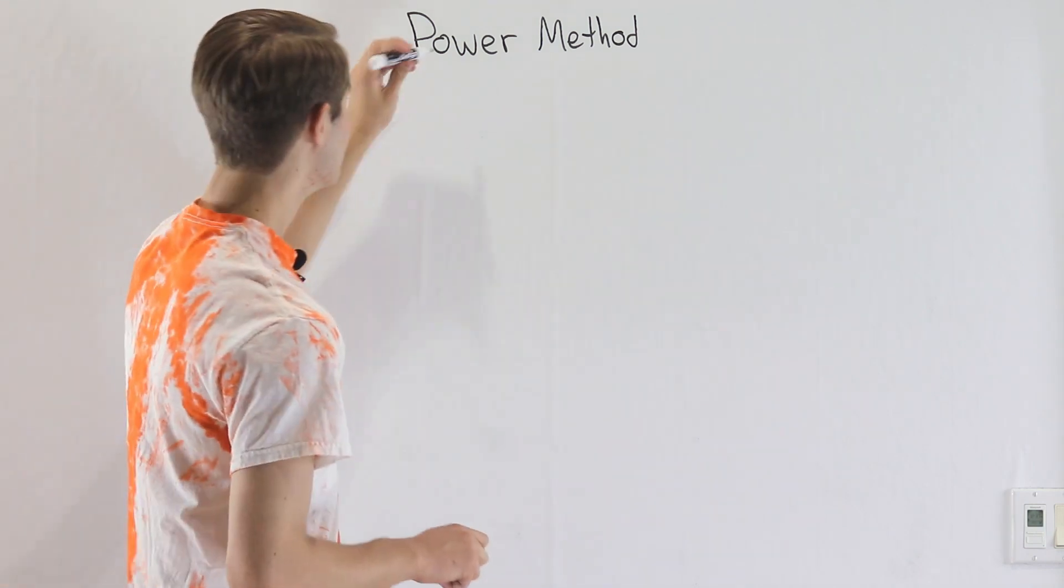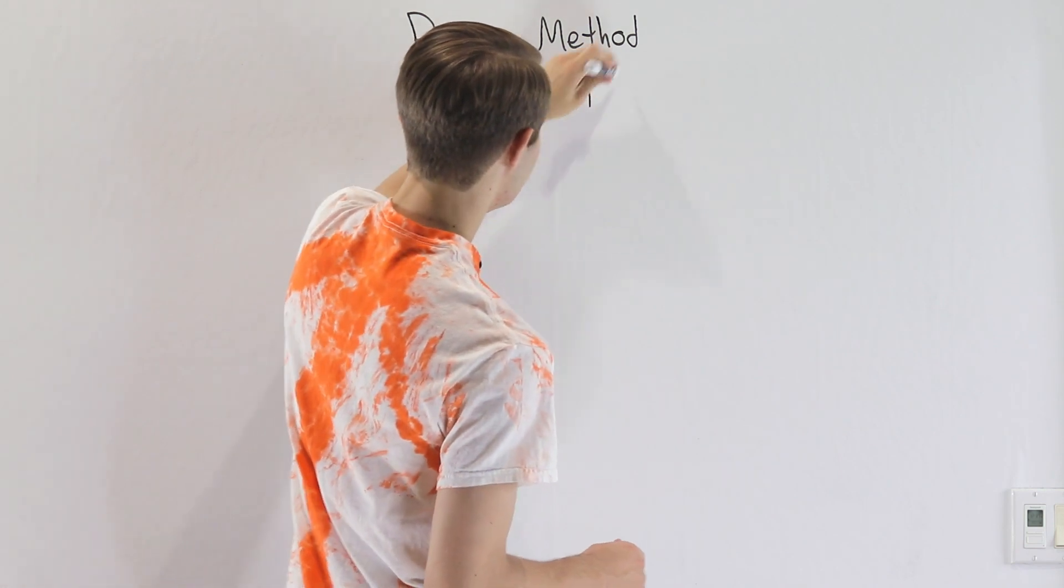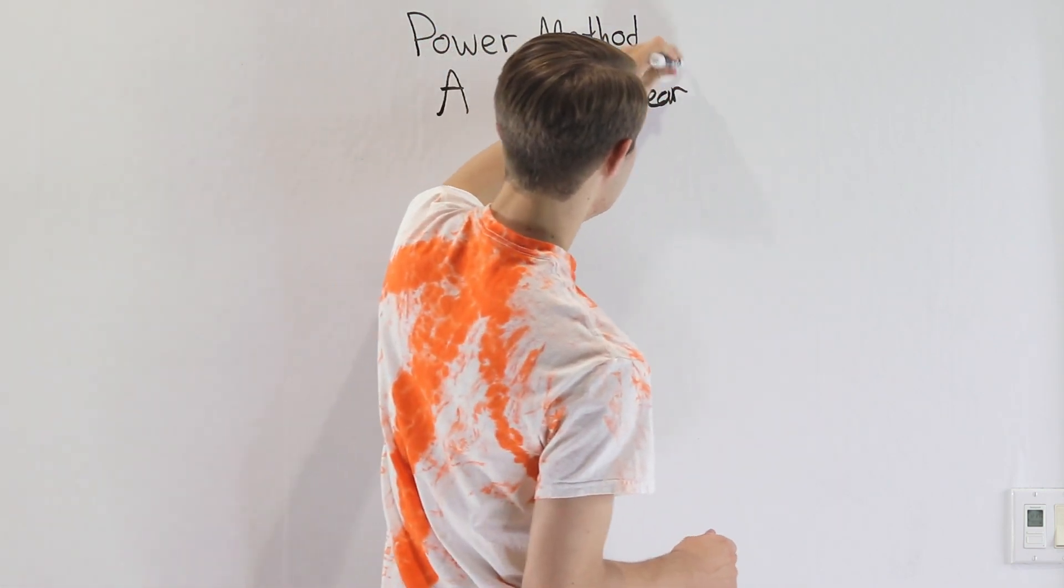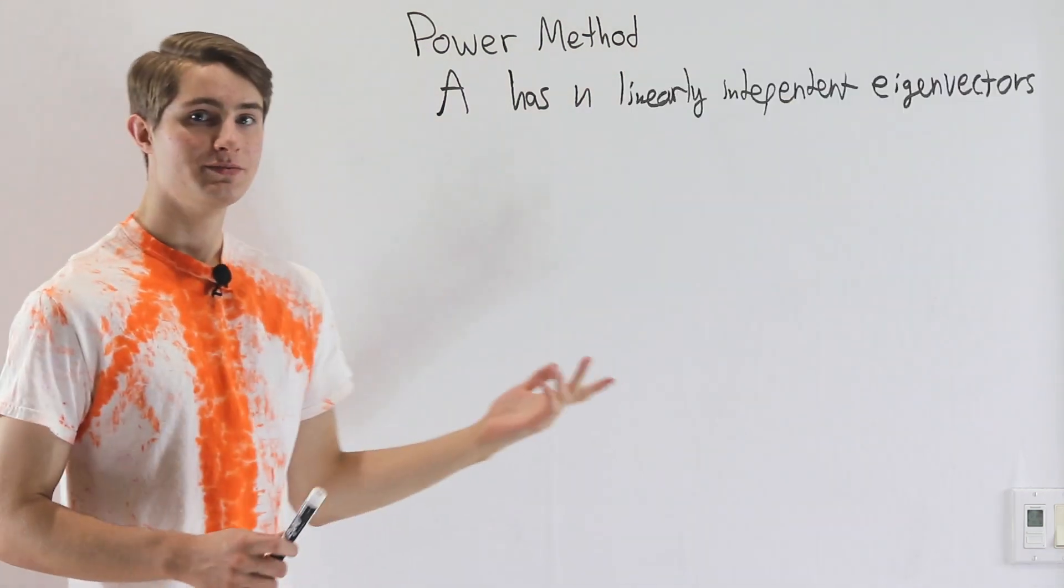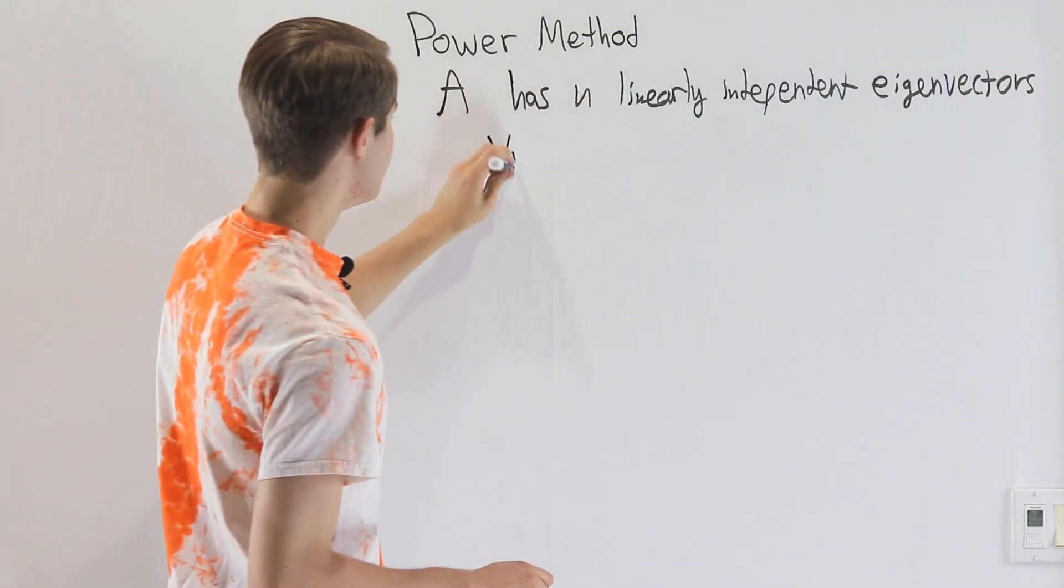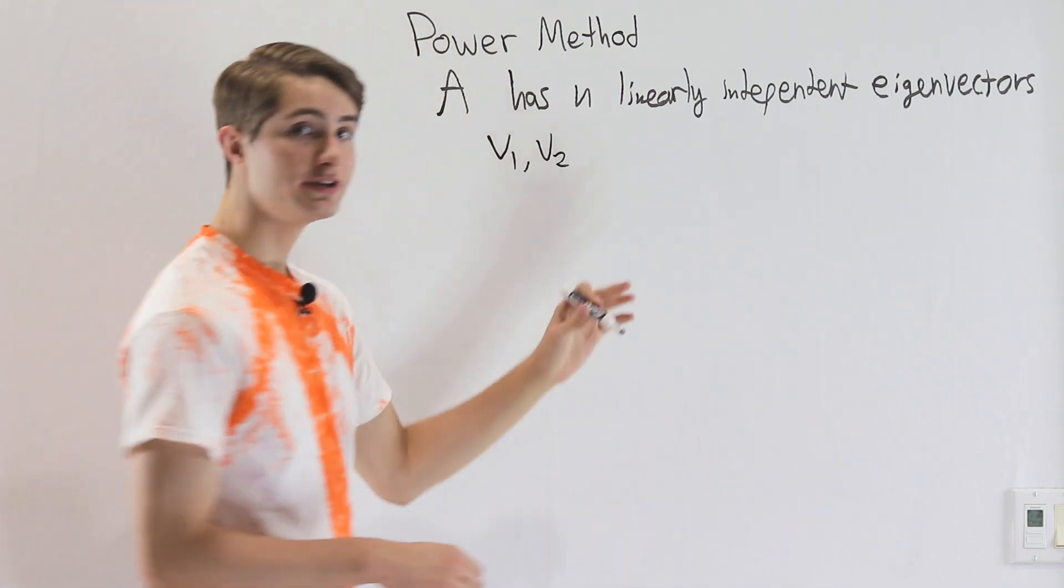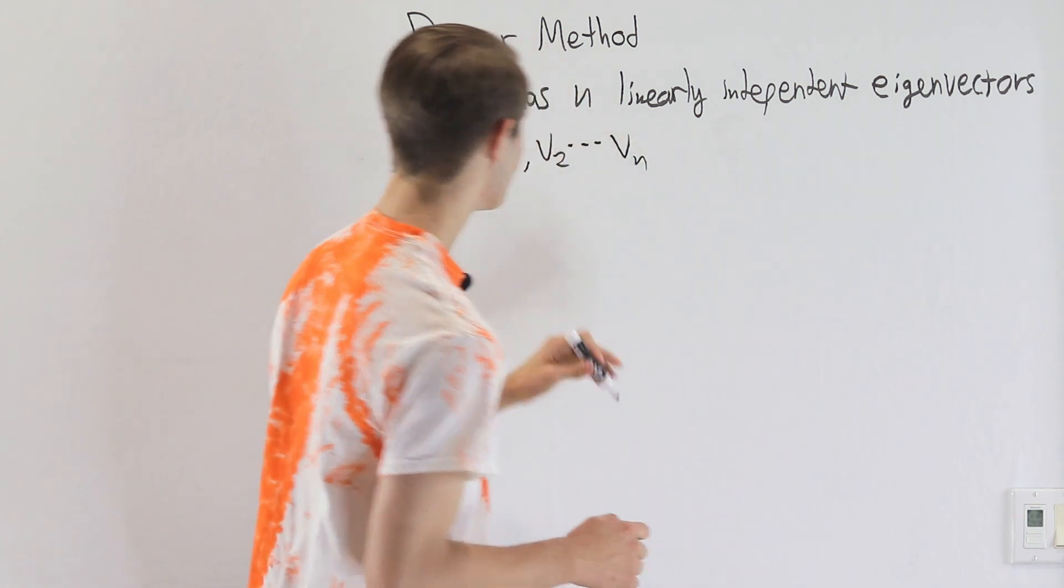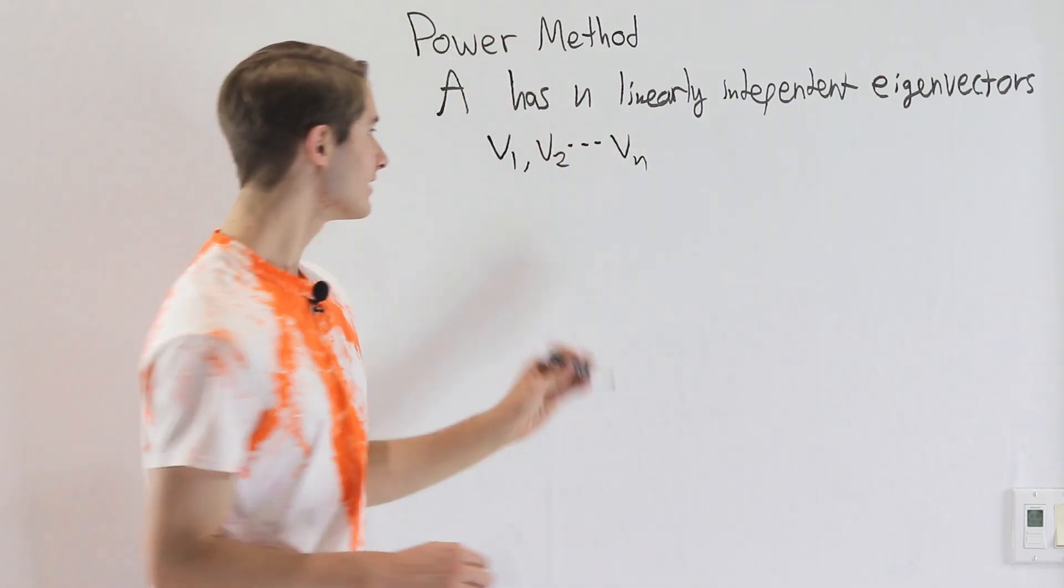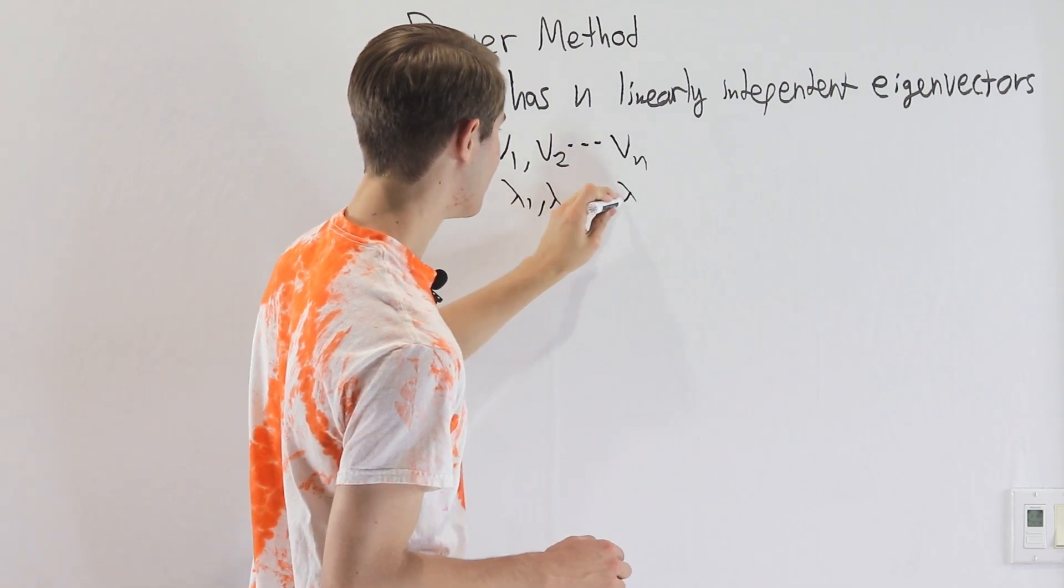Now for the purposes of this video, we're going to assume that our matrix A has n linearly independent eigenvectors. So what this means is that, for example, a 2 by 2 matrix would have 2 eigenvectors, or a 3 by 3 matrix would have 3 eigenvectors. So an n by n matrix is going to have n linearly independent eigenvectors, and those are going to go with n eigenvalues.